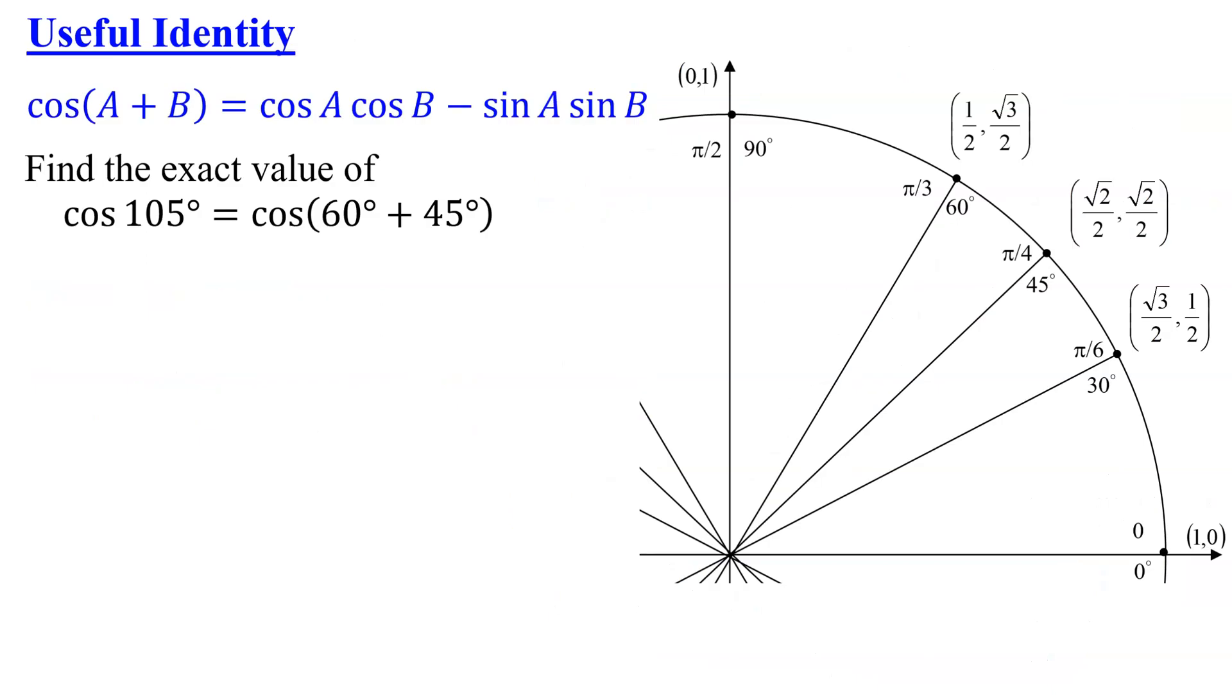And going on to the next slide where I have more room, I'm going to use the cosine of 105 degrees equals the cosine of 60 degrees plus 45 degrees. So here is the identity I'm going to be using: the cosine of A plus B equals cosine A times cosine B minus the sine of A times the sine of B.